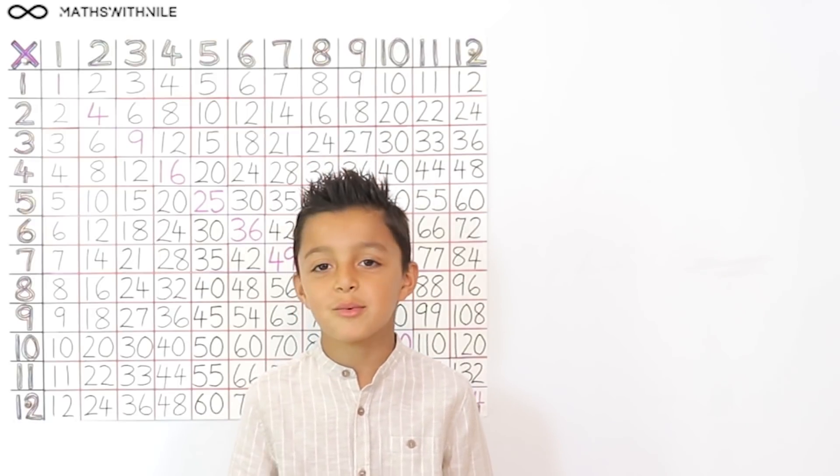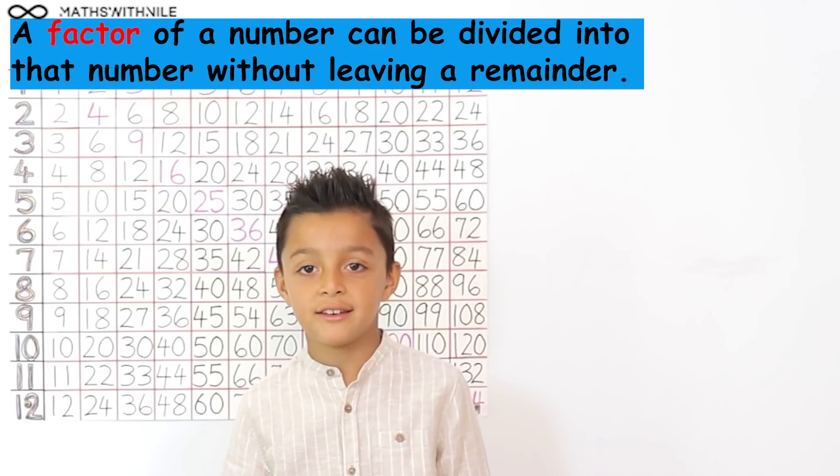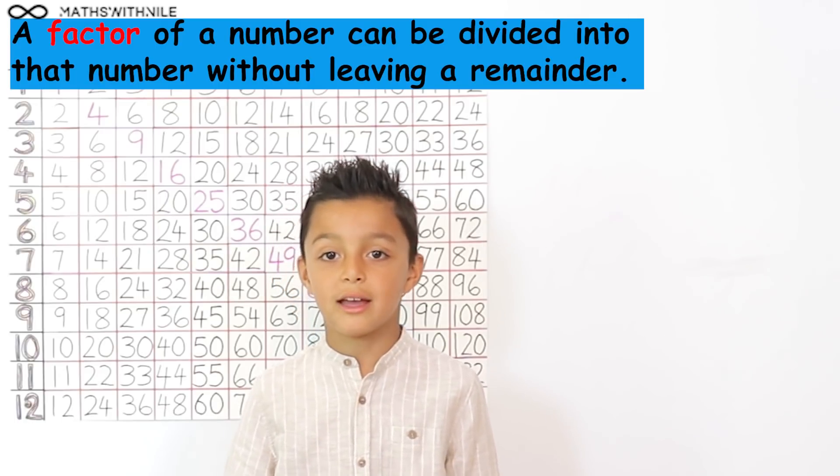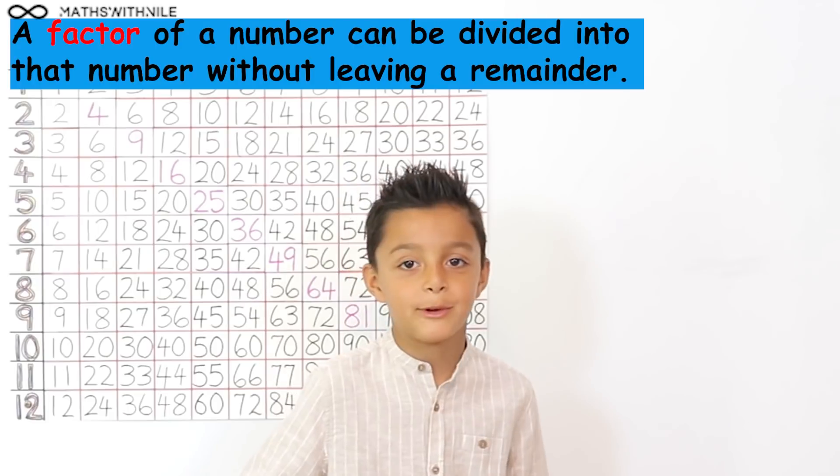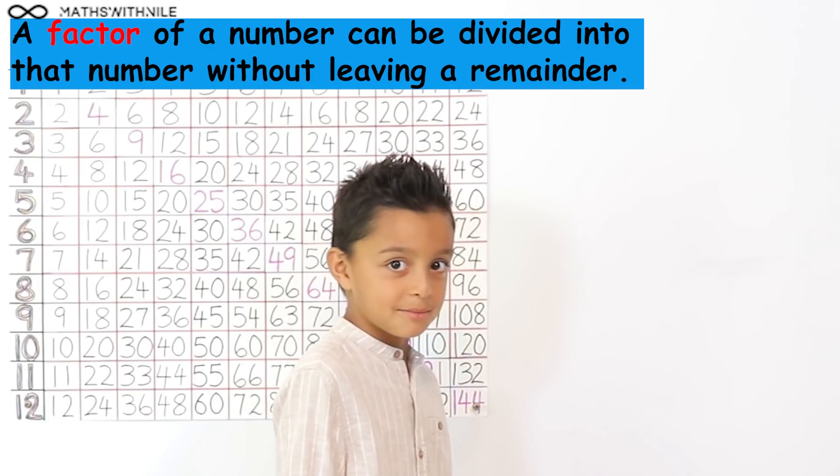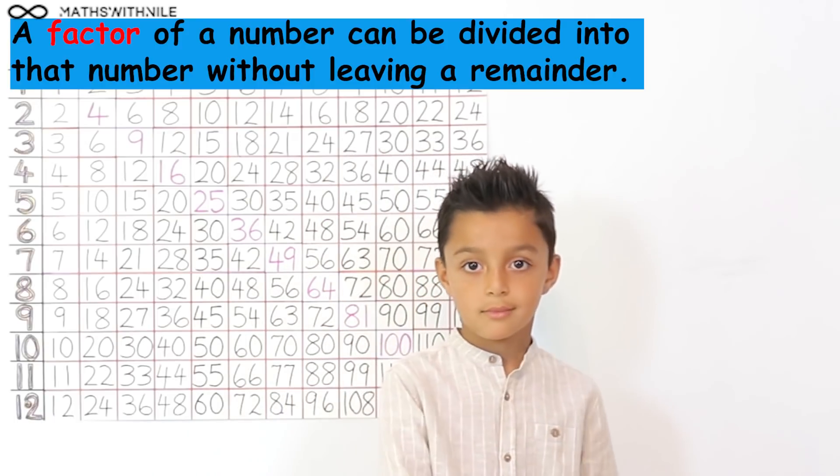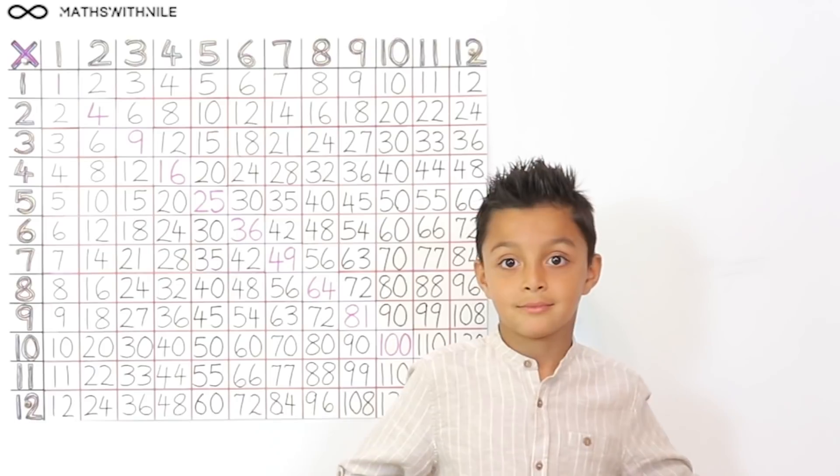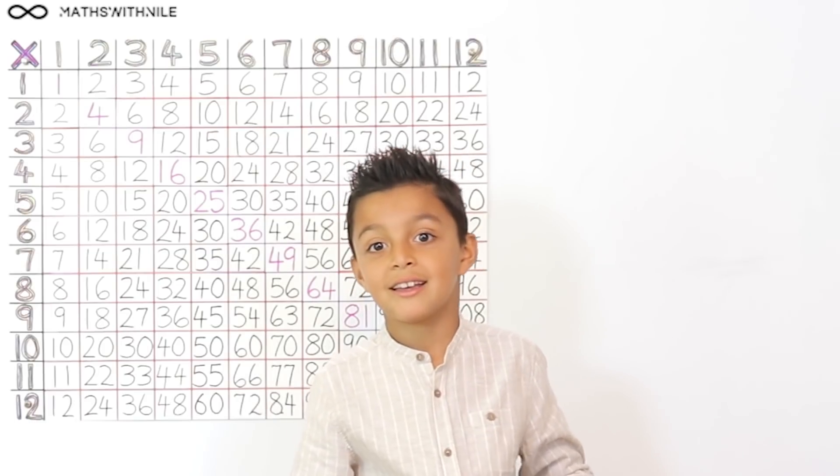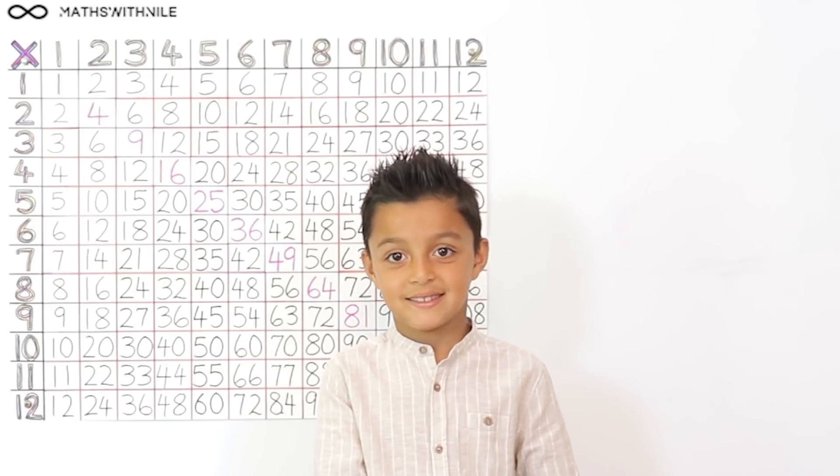And what is a factor? 2 is a factor of 10 because 2 can go into 10. Without? Any leftovers. Very good. Which we call remainders. Yes, without a remainder. So those are factors. Okay. Alright, let's get ready. So all you need to do, I'm going to give you a number and you just need to give me a factor of the number. Okay. And you've got to do it quick.